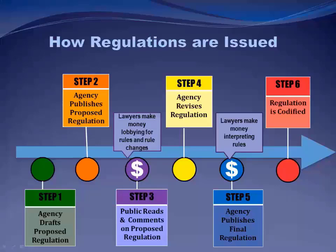Here's the rulemaking procedure in a nutshell. Step one: the agency drafts a proposed rule. Step two: the agency publishes a Notice of Proposed Rulemaking — the NPRM — in the Federal Register and asks the public for comments on the proposed rule. The phrase 'Notice of Proposed Rulemaking' is just a fancy way of saying 'proposed rule.' Step three: the public is given the opportunity to submit written comments. We'll look at the actual website where this all happens, which is regulations.gov — a great, free resource for the federal rulemaking process.